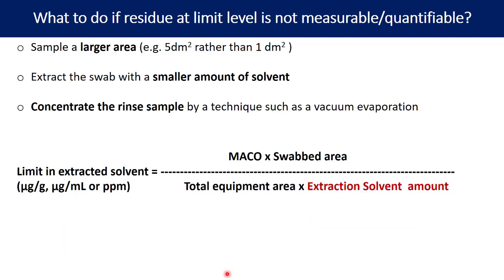You can also concentrate the rinse sample using techniques such as vacuum evaporation to further reduce volumes so the analyte concentration increases. A rotary evaporator or other suitable drying processes can be used for this purpose.